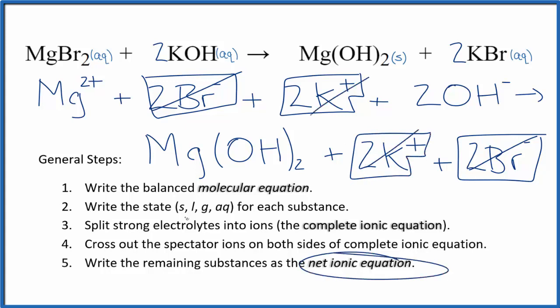What's left, that's the net ionic equation for magnesium bromide plus potassium hydroxide. I'll clean this up and write the states. We'll have our net ionic equation.